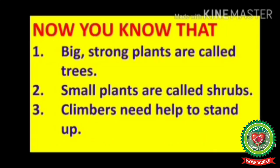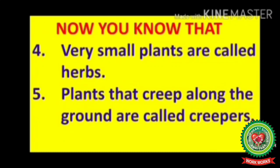In this chapter we have learnt: big strong plants are called trees, small plants are called shrubs, climbers need help to stand up, very small plants are called herbs, and plants that creep along the ground are called creepers. This is all for today. Read lesson one: big plants, small plants, and learn the terms of this chapter. We will meet in the next session.